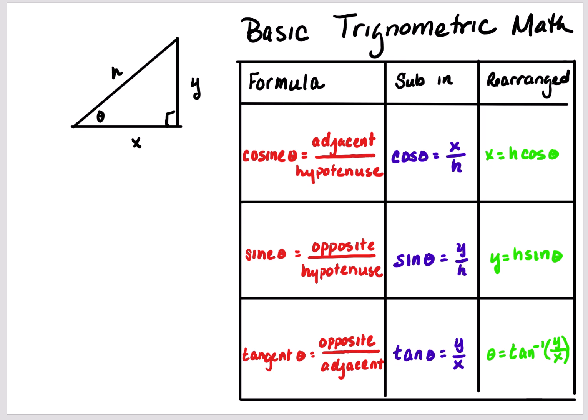If we have a right triangle, opposite the right angle is the hypotenuse H. Theta represents the angle. X, if you notice, is next to the theta, so x is adjacent — meaning next to. Y is opposite theta, so y is opposite.